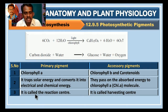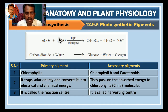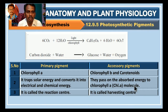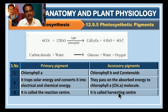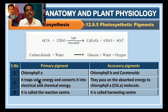Chlorophyll A is called the reaction center because the reaction takes place inside it. The role of accessory pigments is that they pass on the absorbed energy to Chlorophyll A, which is why they are called the harvesting center. So the reaction center converts solar energy into electrical and chemical energy, while the harvesting center passes on the absorbed energy to Chlorophyll A.